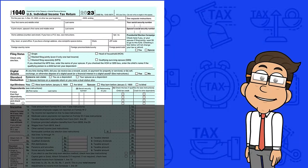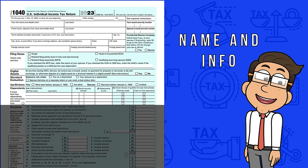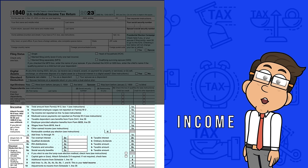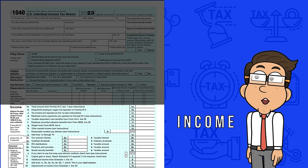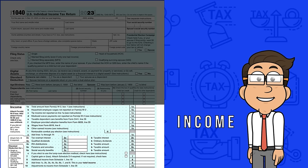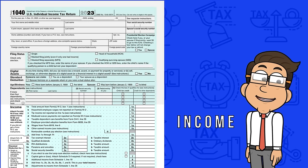Whether you're e-filing using software or filling it out by hand, understanding this form is key to managing your taxes effectively. Let's start with a bird's eye view of the form. It kicks off with your personal information: name, address, social security number, filing status, and dependents. This might seem basic, but it's crucial for ensuring everything else falls into place. Next, you add up all your income for the year — wages, salaries, bonuses, and any other income.